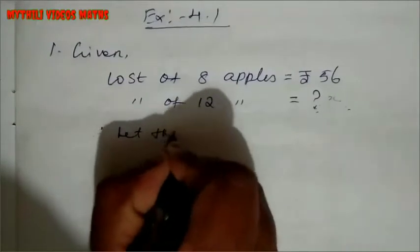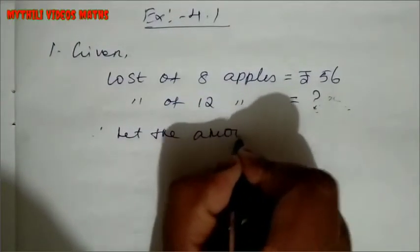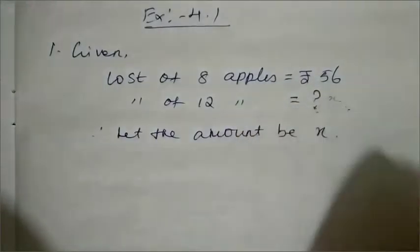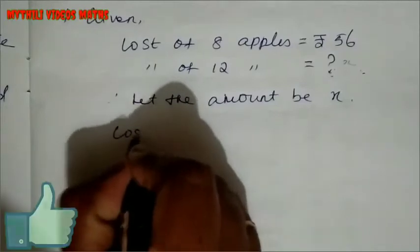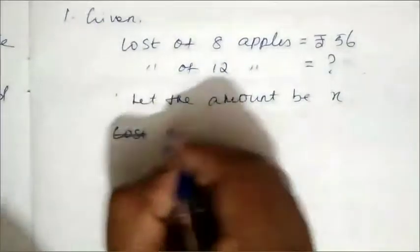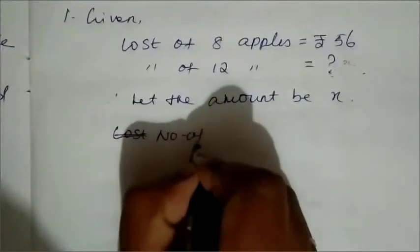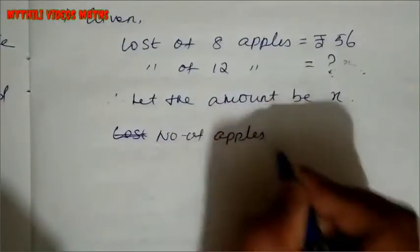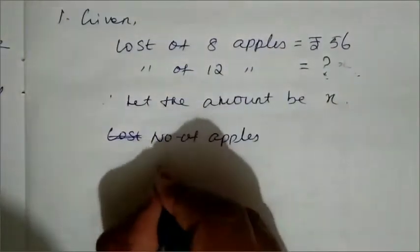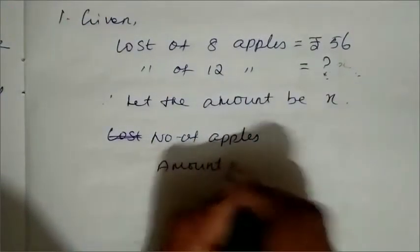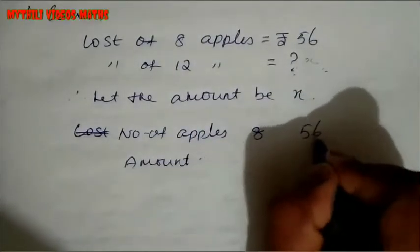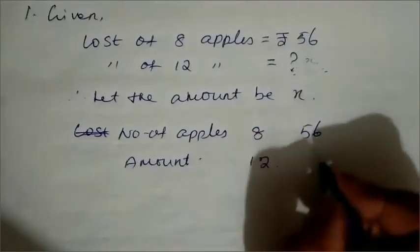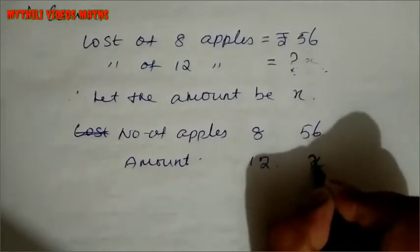Let the unknown amount be x. Now we make a table. Number of apples in one column: 8 and 12. Cost in the other column: 56 rupees and x. So we have 8 apples costing Rs.56, and 12 apples costing x.